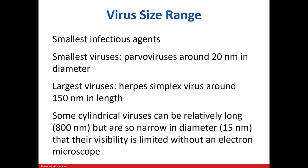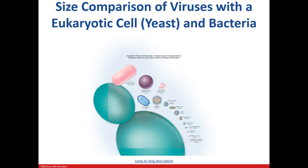We know that they are small, the smallest being 20 nanometers, while viruses like herpes simplex can be about 150 nanometers in length. Some are so thin that it's even difficult to visualize with an electron microscope. This picture shows the relative size of bacteria compared to the largest and smallest viruses. Just to give you an idea of the size difference, thousands of viruses could fit in one bacterium.